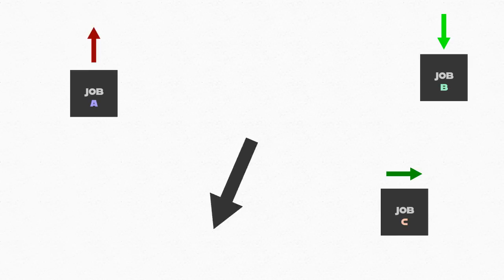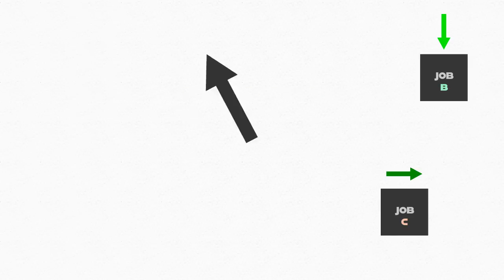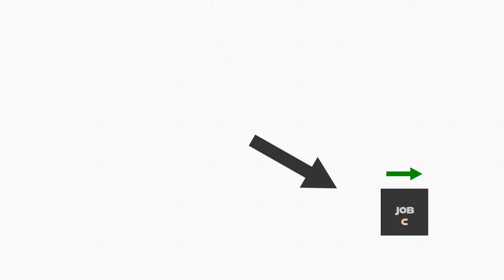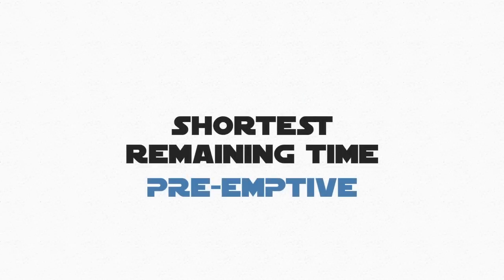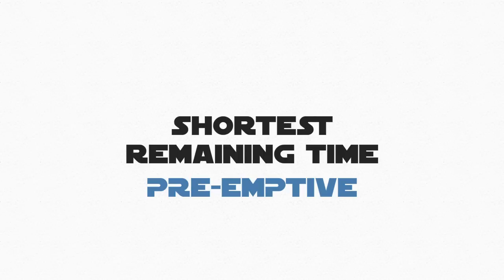Priority scheduling is another example of a non-preemptive algorithm, and places priority on certain jobs based on precedence — so admin jobs would be ruled over basic user jobs. It also takes into consideration the resources that are required and how long the job has spent in the queue. Shortest remaining time is a preemptive version of SJN, meaning it has the power to interrupt a job being processed and favor a shorter job to replace it if it is in a waiting state.